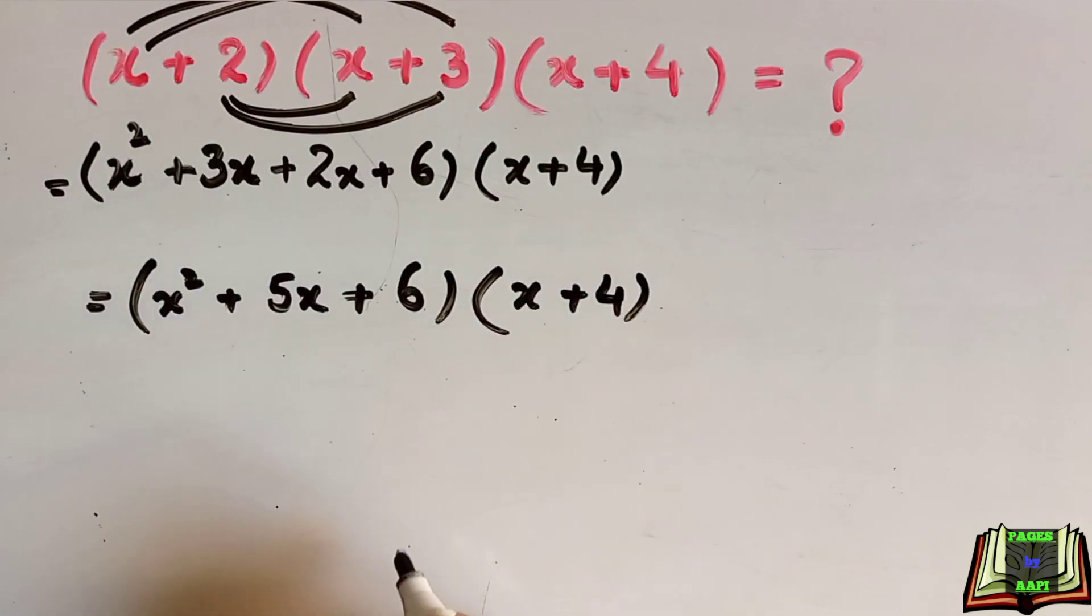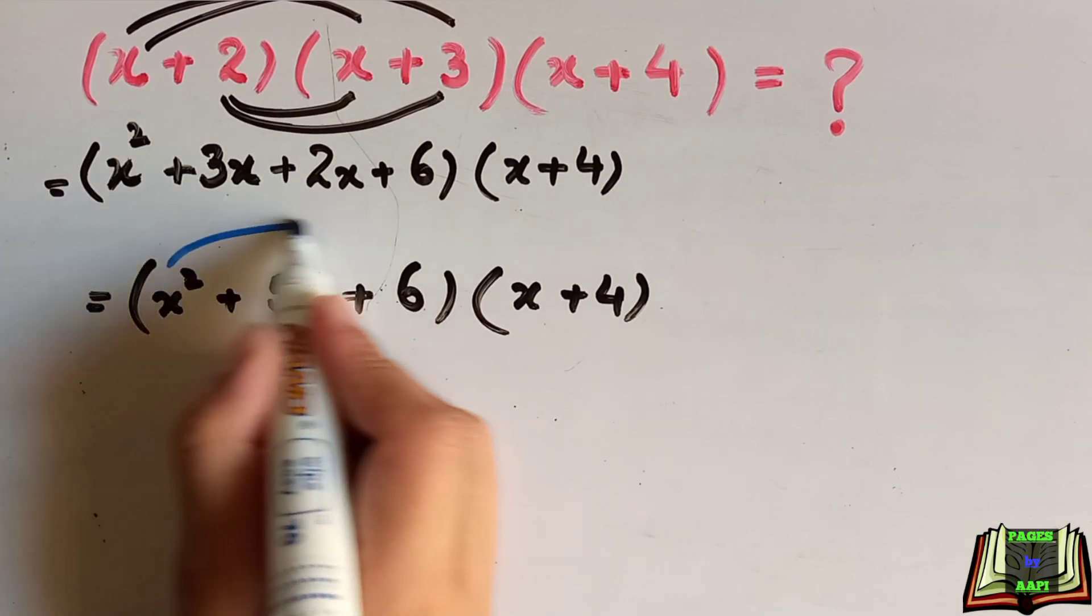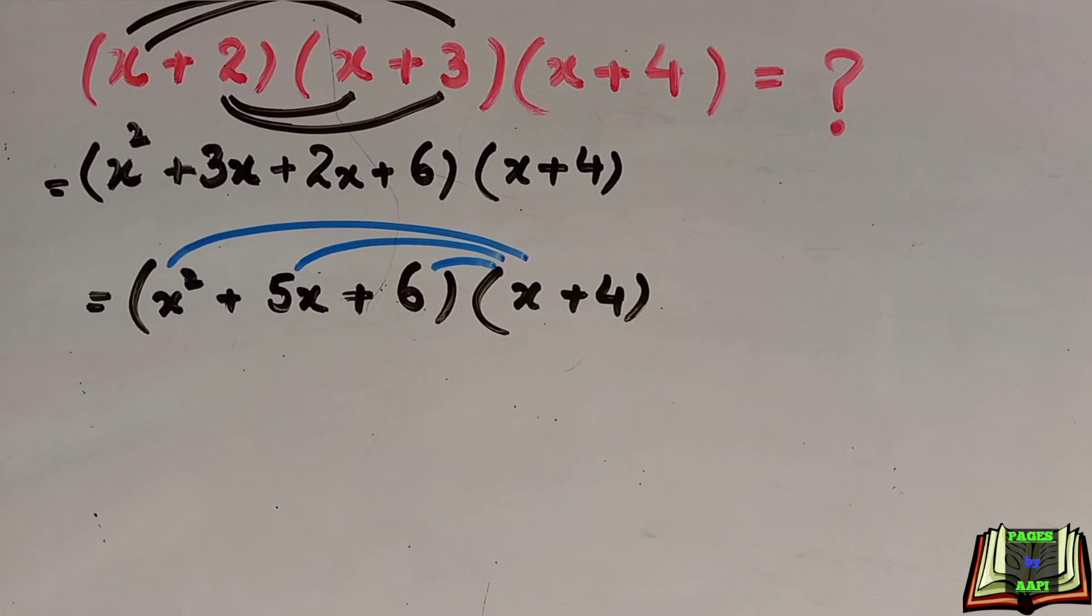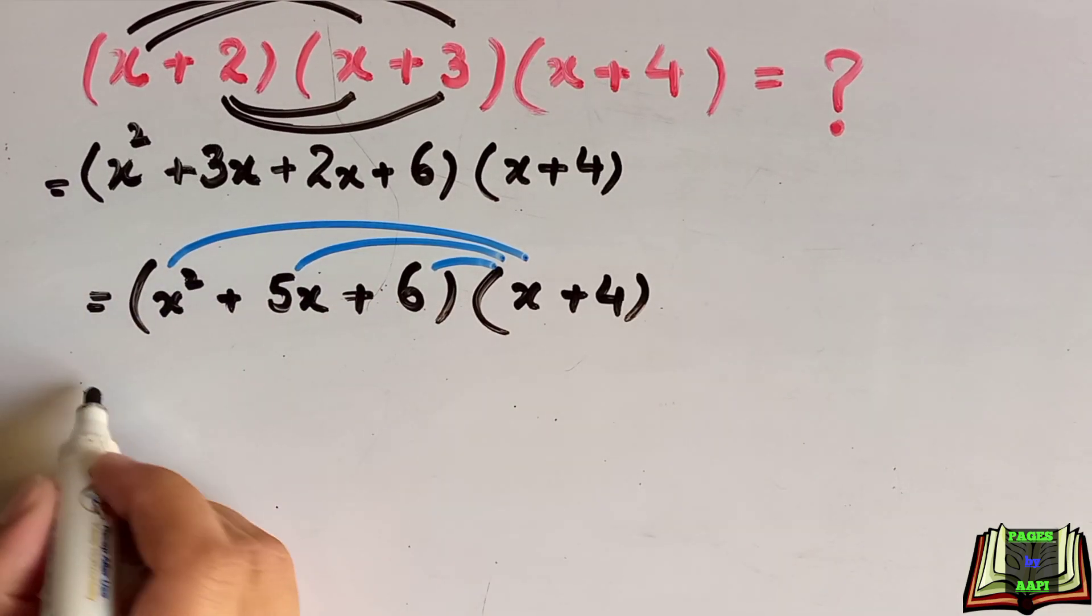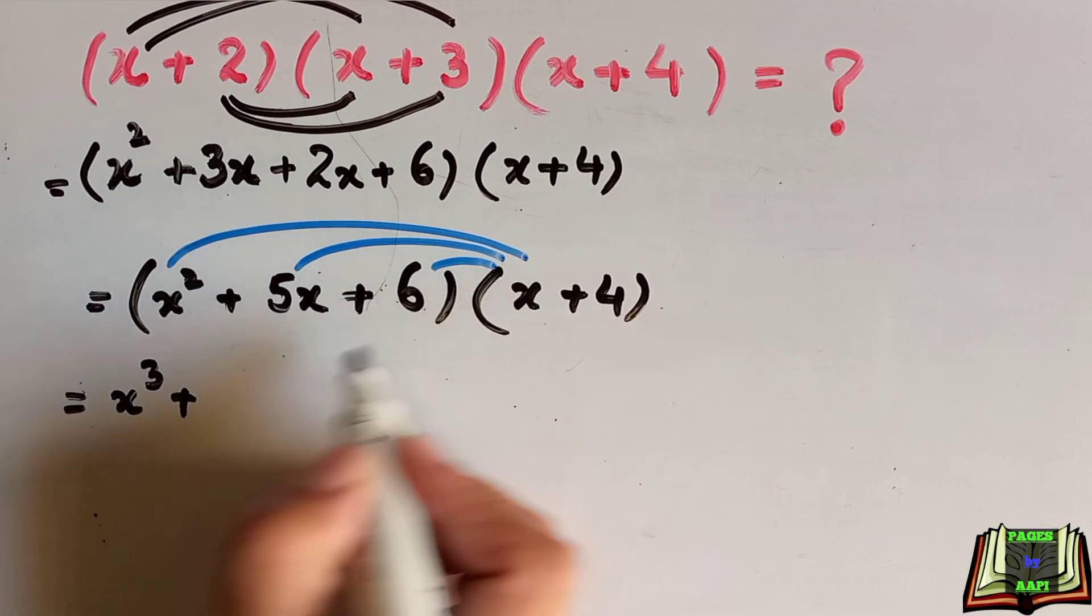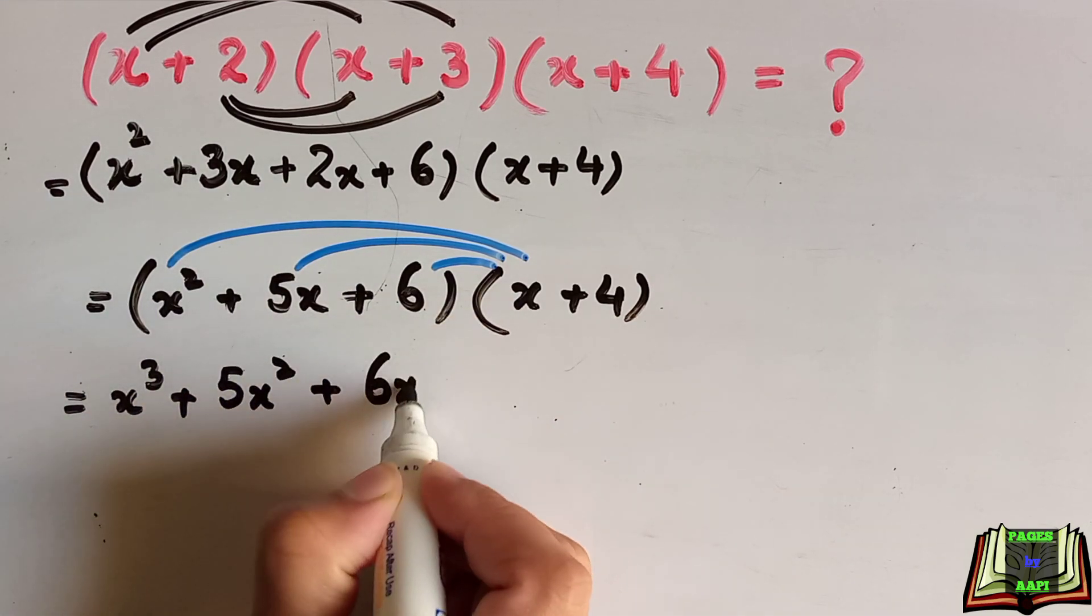Now we are going to multiply these two expressions. x square will be multiplied by x, and then 5x will be multiplied by x, and then 6. x square into x is x cube plus 5x into x is 5x square. 6 into x is 6x.